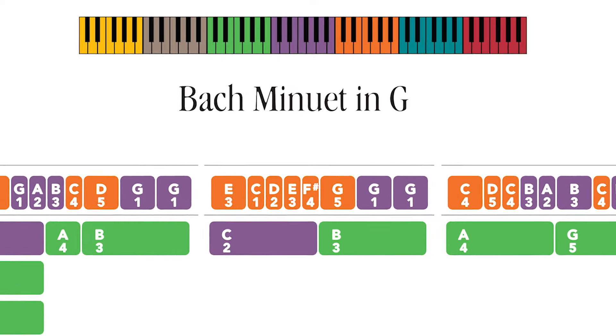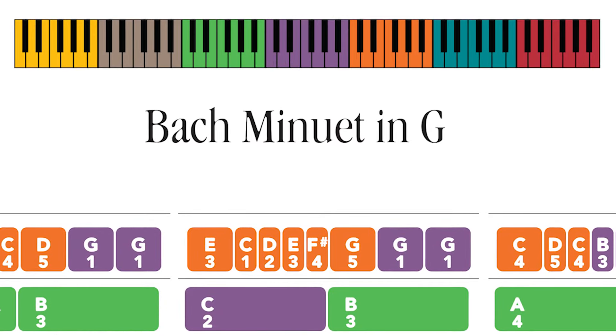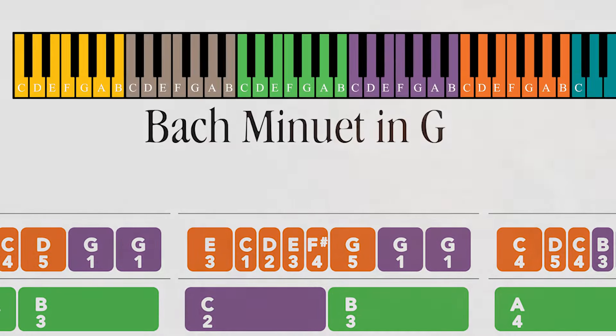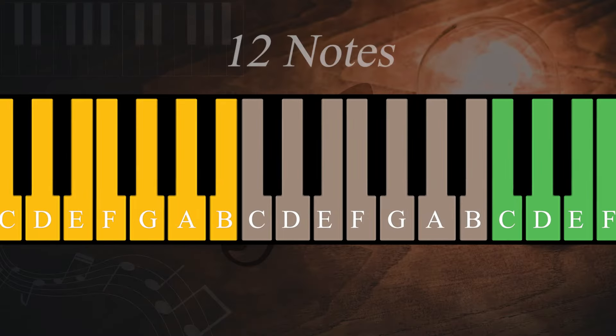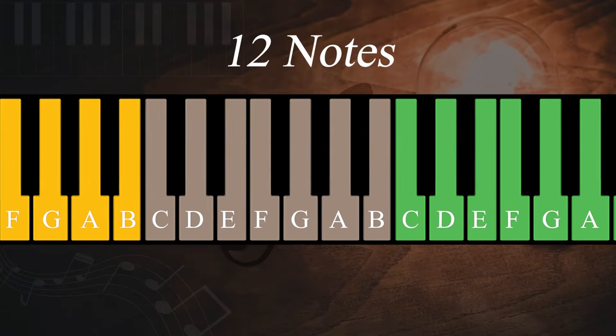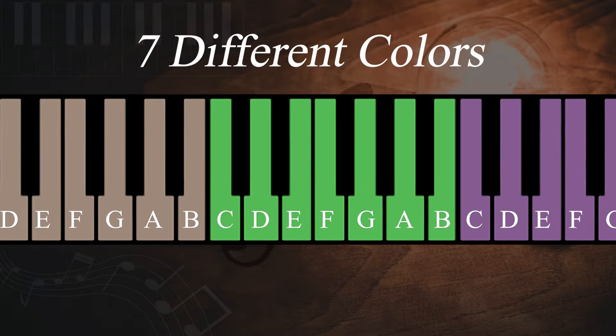When you open up one of my piano tabs, the first thing you'll see at the top of each page is a color-coded keyboard. There are 12 notes on your piano, and each one of these 12 notes occurs one time within each of the seven different colors.